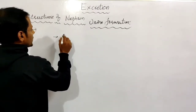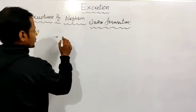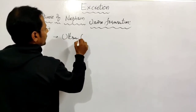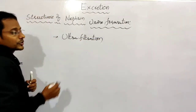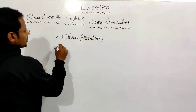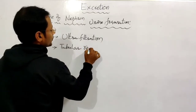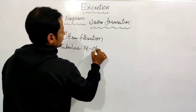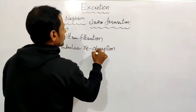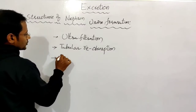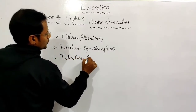The three steps are: one is glomerular filtration, also called Bowman's capsule filtration - this is called ultrafiltration. Next is tubular reabsorption. And the third one is tubular secretion.